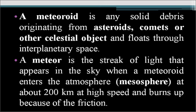A meteoroid is any solid debris originating from asteroids, comets, or other celestial bodies that floats through interplanetary space. A meteoroid is not restricted to the asteroid belt — it can travel anywhere in the universe. It mainly originates from asteroids, comets, or any other celestial body and can travel through any part of the universe.